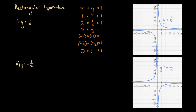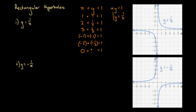This relationship between x and y is really what we're going to be examining with rectangular hyperbolas. Instead of writing this as x times y equals one — or xy equals one — we're going to write it as y equals something. We divide both sides by x, and we get y equals one over x. This is the equation of a rectangular hyperbola.